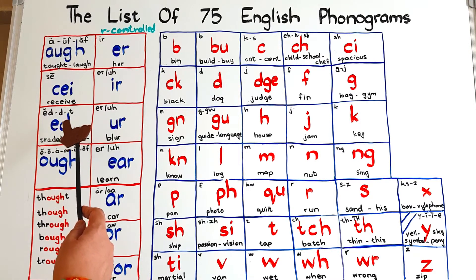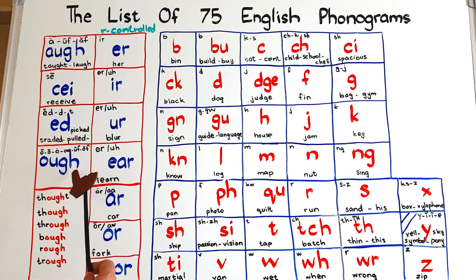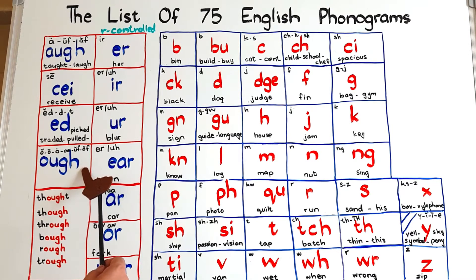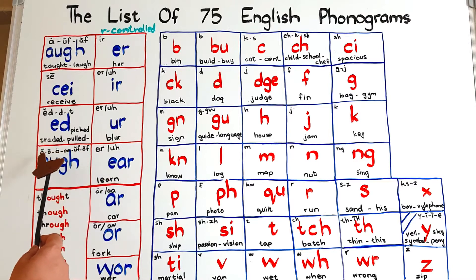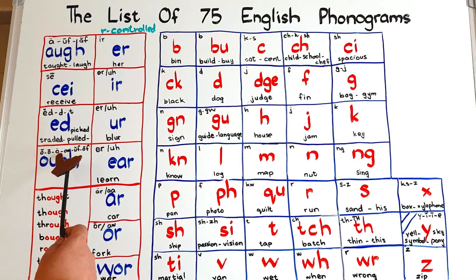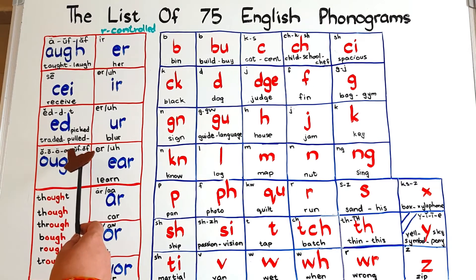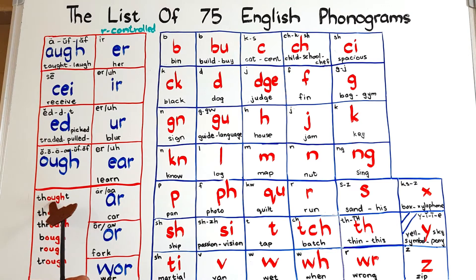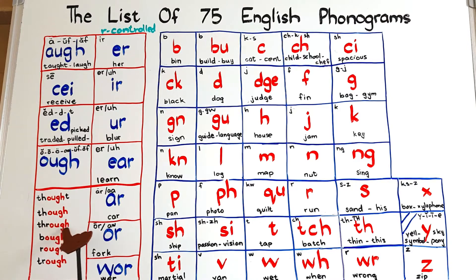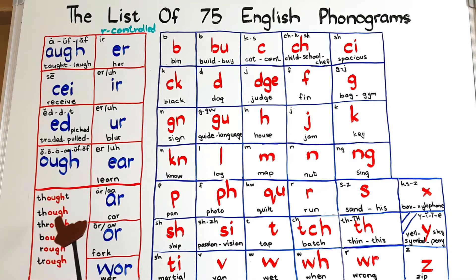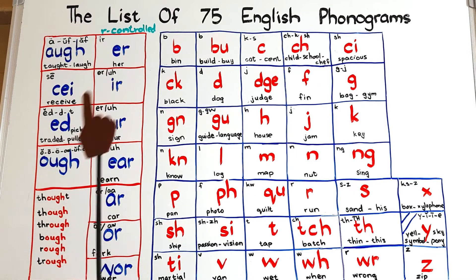Now we have OUGH. OUGH has six different pronunciations — yes, six! The first is the short 'oh' sound, then the long 'oh', then the long 'oo' sound, 'ow', 'off', and 'uff'. The short O is as in 'thought', the long O as in 'though', the long OO as in 'through', OW as in 'bough', OFF as in 'rough', and UFF as in 'trough'. The link for more is in the description box.